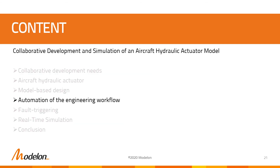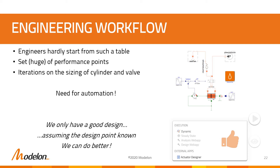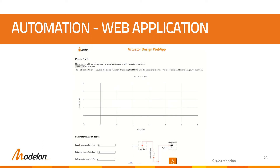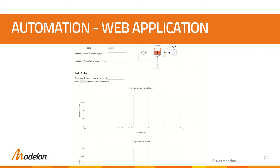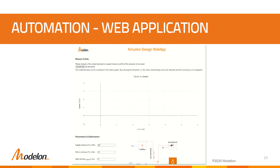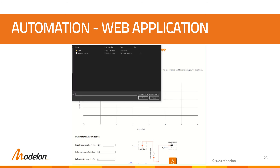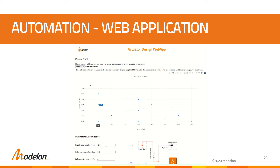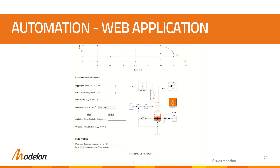We will now present the actuator web app that automates a more realistic engineering workflow. In Modelon Impact, the actuator design web application is available at the model level by hovering the simulate button. After clicking on the web app button, a dedicated browser tab opens. This web application consists mainly of two parts: the first focuses on the actuator sizing, while the second part performs a linear analysis of the sized model. The actuator sizing is performed based on a mission profile that consists of speed versus load points. By clicking on the fit button, the main sizing points are highlighted. The sizing will only consider this reduced set of points, which makes it faster. We can then specify the boundary conditions of our system, such as system pressures and oil density.